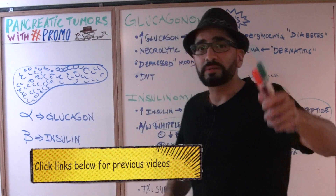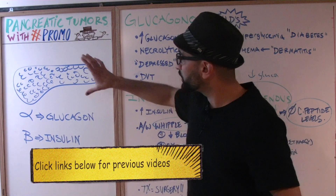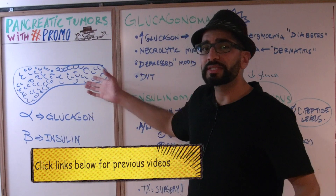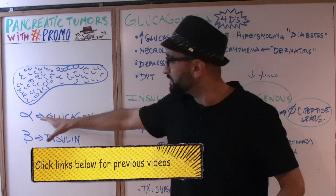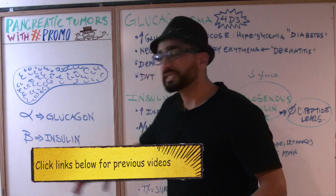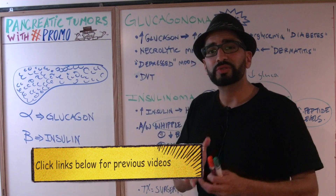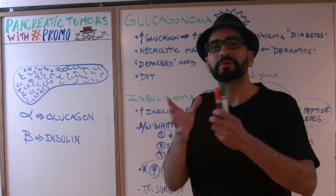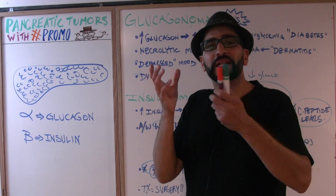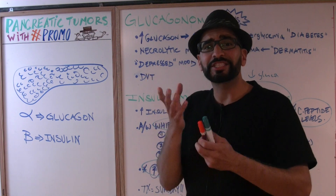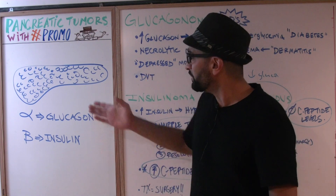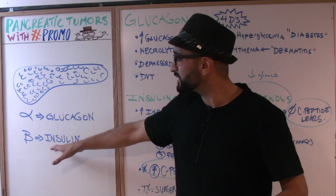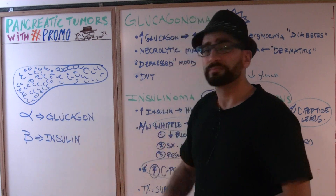Before we get into the pancreatic tumors, I just want to remind you guys about this diagram of the pancreas. We have alpha cells and the beta cells. The delta cells also exist, but we'll save that for when we talk about the pancreas and the digestive system. Today, the alpha cells secrete glucagon and the beta cells secrete insulin.